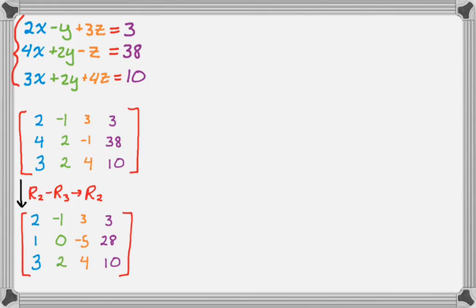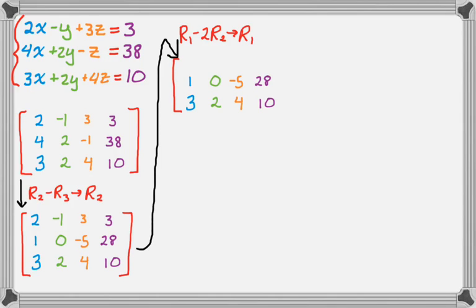I'm just looking now to see what I can do. Now I would like to create 0. So I have a 1 in column 1. I'm going to use that 1 to create 0s in the rest of column 1. So I'm going to do row 1 minus 2 times row 2 and store the result in row 1. Row 2 and row 3 do not change in this case. So now I'm going to do 2 minus 2 is 0, negative 1 minus 0 is negative 1, 3 plus 10 is 13, and then 3 minus 56 is negative 53.